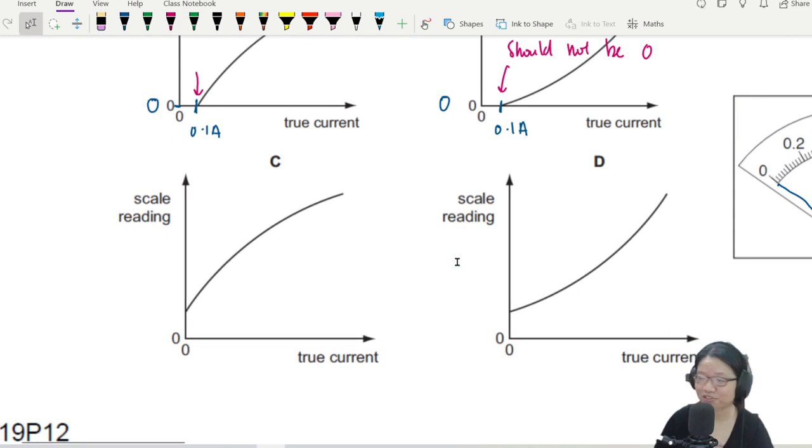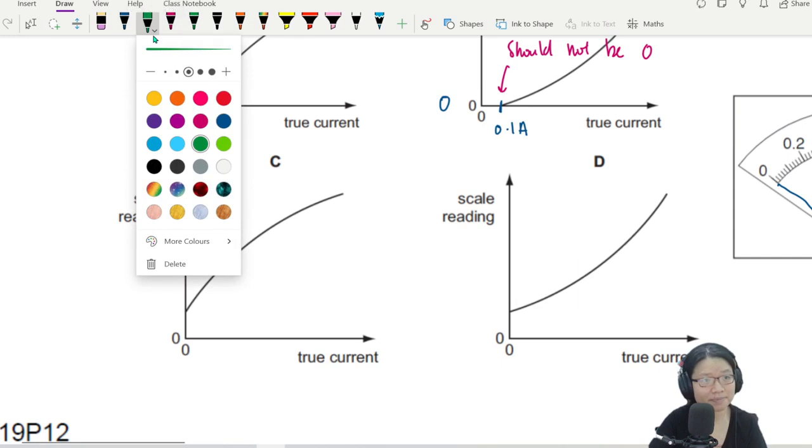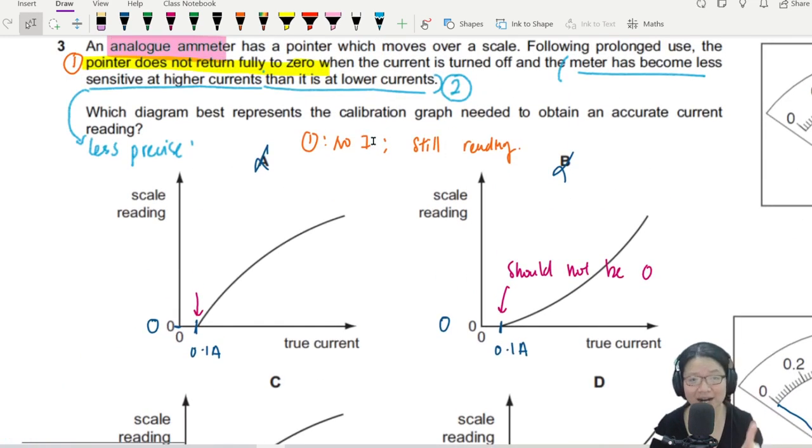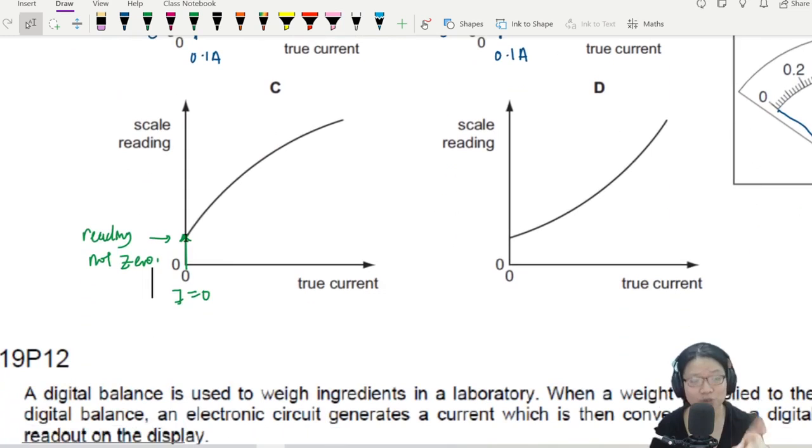So now we've got these two beautiful graphs. When the true current is 0, at this point, my true current is 0, I equal to 0. But the scale reading, reading not 0. This is what we want. It says here, no current still got reading. D also, no current still got reading. So this is issue 1 set up. This is issue 1. This problem here.